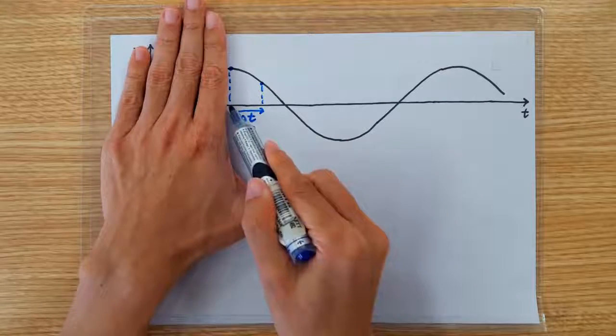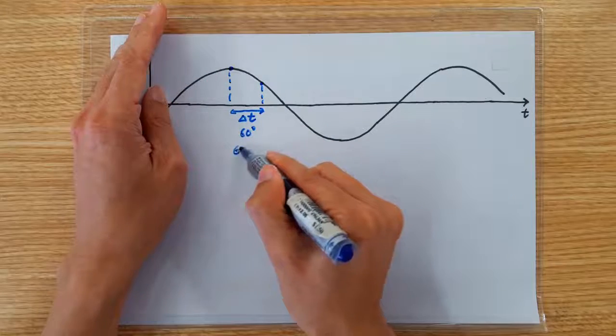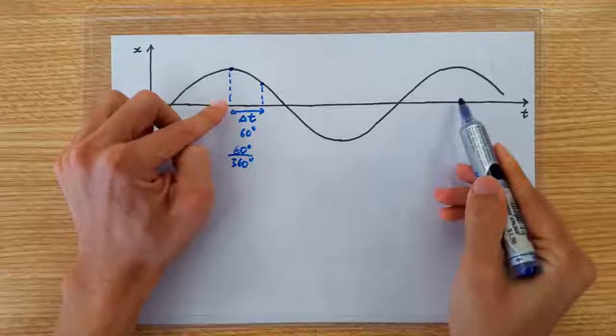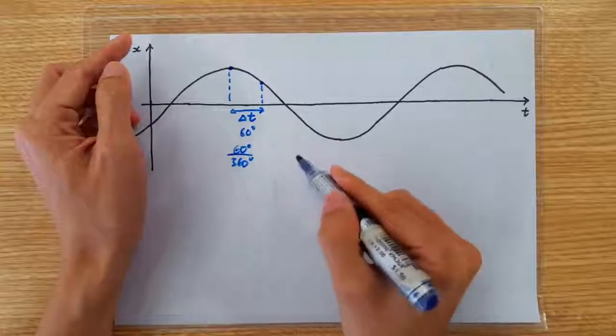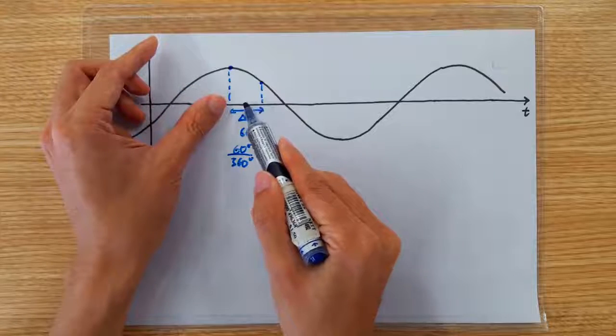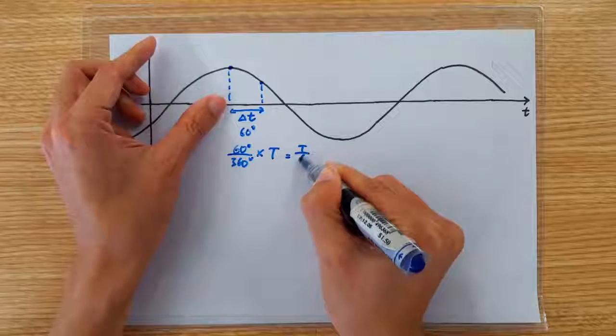Which means this must correspond to one sixth of a cycle, because 60 degrees out of a total of 360 degrees is one sixth. So this must correspond to one sixth of a cycle. Which means in terms of time, this must correspond to one sixth of a period.